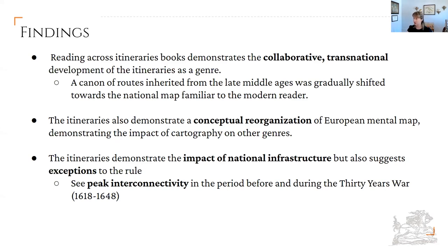Overall, reading across the itinerary books demonstrates a collaborative transnational development of the itinerary as a genre. A canon of routes was inherited from the late middle ages and gradually shifted towards the national map more familiar to the modern reader. The itineraries also demonstrate a conceptual reorganization of the European mental map, showing the impact of cartography as well as other events. The network approach also demonstrates the long-term impact of national infrastructure, and suggests important exceptions to the rule — particularly a period of intense connectivity which immediately precedes and continues during the Thirty Years War.